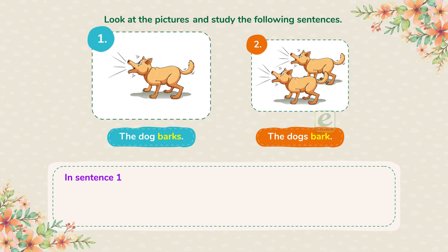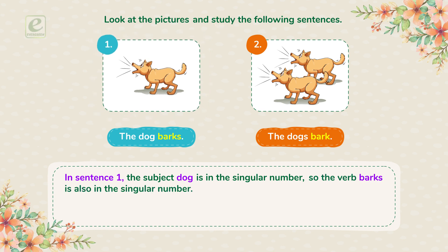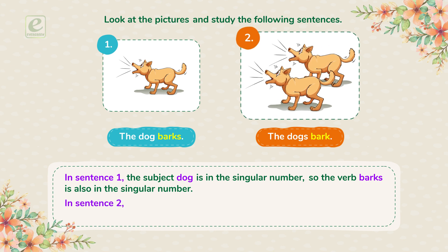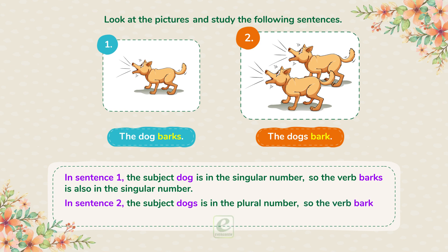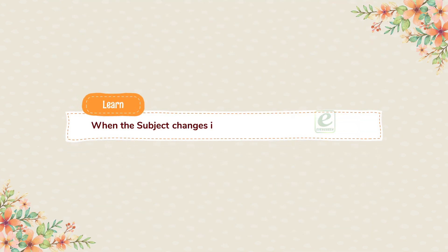In sentence 1, the subject 'dog' is in the singular number, so the verb 'barks' is also in the singular number. In sentence 2, the subject 'dogs' is in the plural number, so the verb 'bark' is also in the plural number. When the subject changes in number, the verb also changes.